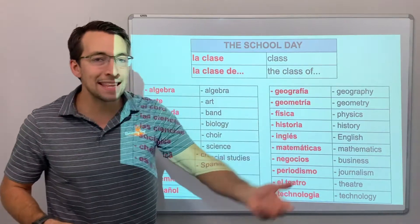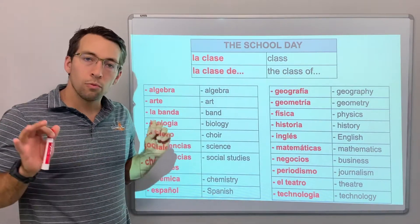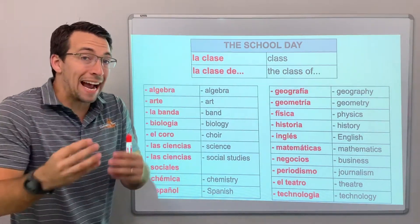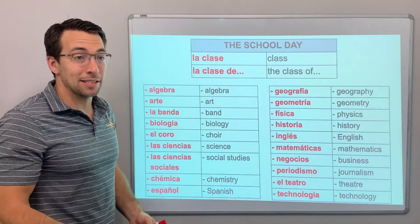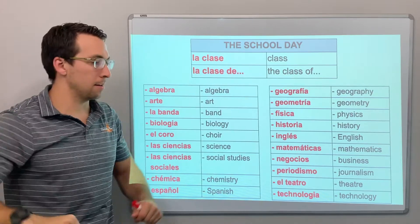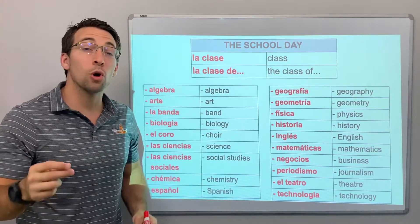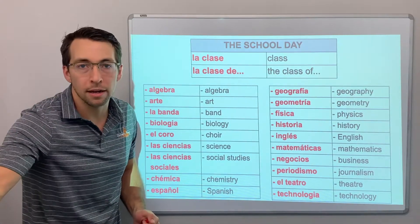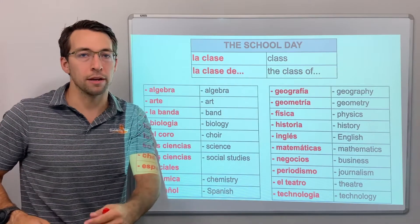La clase de arte — the art class. Remember that these subjects are adjectives and they describe the class. So you're going to class — what class? Art class, band, choir, algebra. But in Spanish we always say 'clase.' We don't just say 'biología'; we say 'clase de biología.'